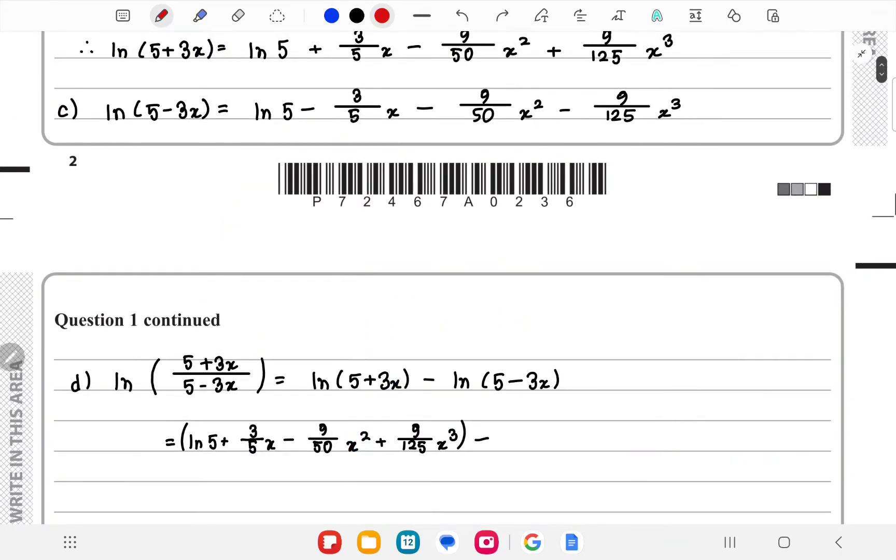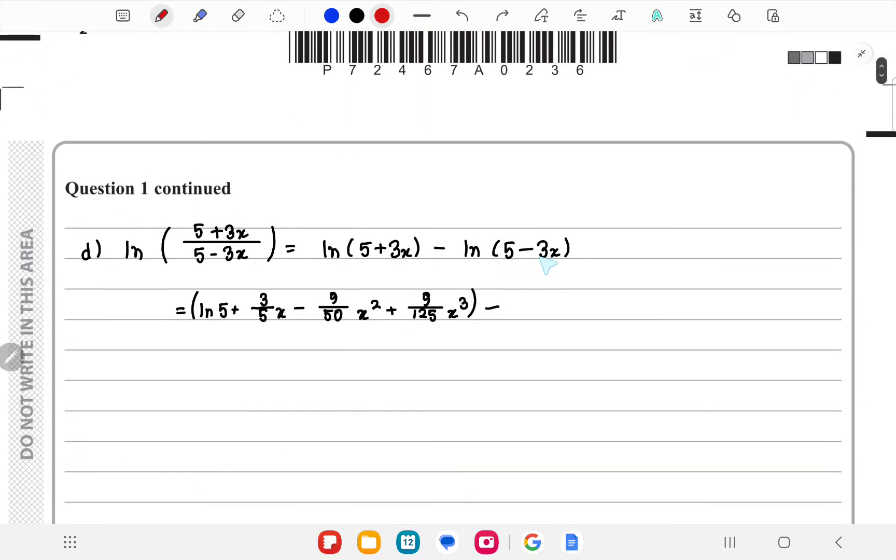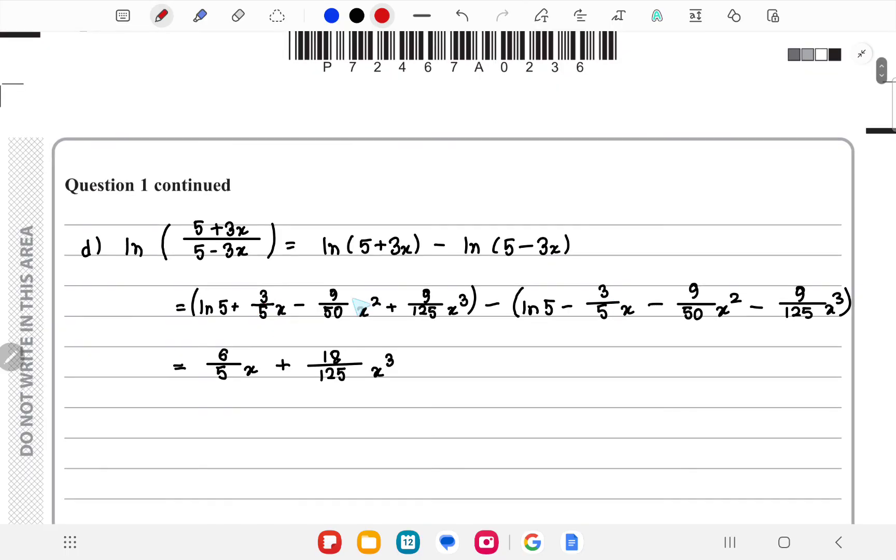And for this we have found this in part c, and we know this is this, so we add both of them—subtract—and we get (6/5)x plus (18/125)x³, because these terms cut out, leaving this.